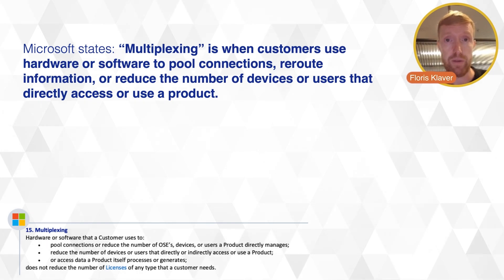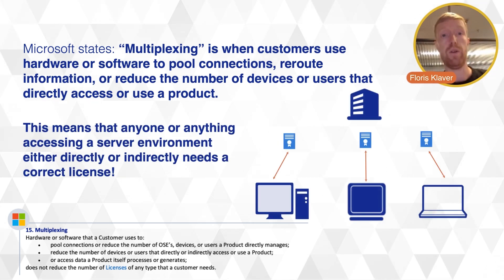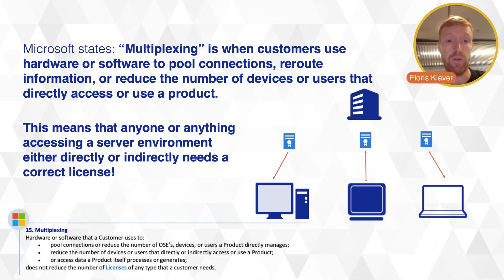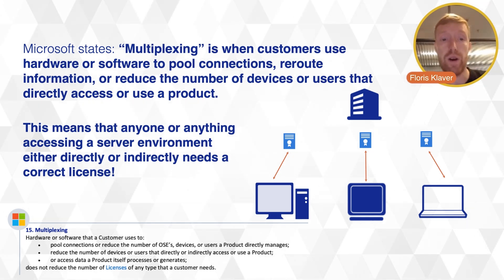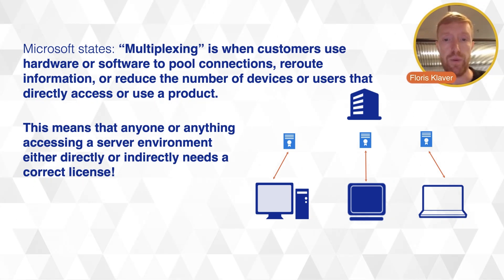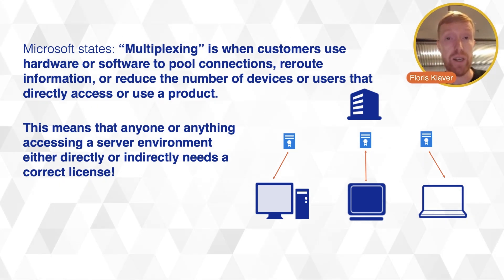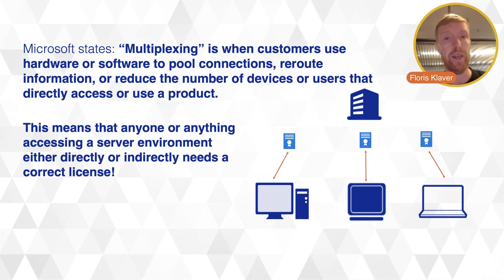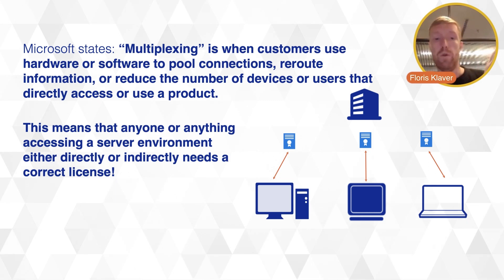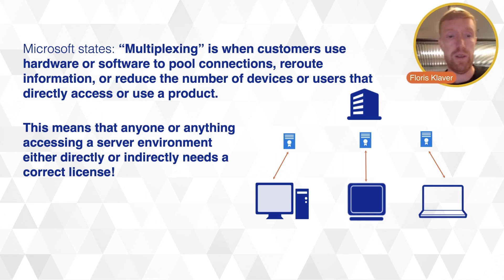One important aspect within Microsoft licensing is something called multiplexing, which may also be present with other software vendors. Multiplexing is basically stated by Microsoft as when customers use hardware or software to pool connections, reroute information, or reduce the number of devices or users that directly access or use a product. This means that anyone or anything accessing a server environment, either directly or indirectly, needs to be properly licensed — you cannot license one machine and then have 20,000 people sign into it.